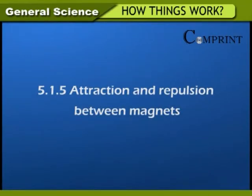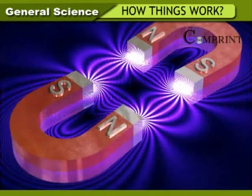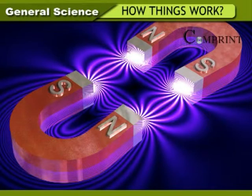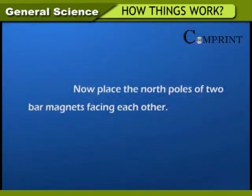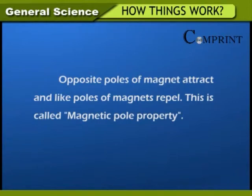Attraction and repulsion between magnets. Activity: Take two bar magnets and observe their north and south poles. Arrange them such that the north pole of one magnet faces the south pole of the other. Slowly bring them closer — both poles attract each other and at one point the magnets stick together. Now place the north poles of two bar magnets facing each other and slowly push one toward the other. Both magnets repel each other and move away. Opposite poles attract and like poles repel. This is called the magnetic pole property.